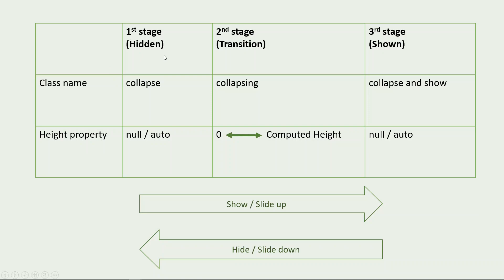Here is a summary of the stages. In the first stage, the class value is 'collapse' and the height property is null or auto. In the second stage, the class name is 'collapsing'. If transitioning from hidden to shown, the height is set to zero first and then to the computed height — the actual height of the element.